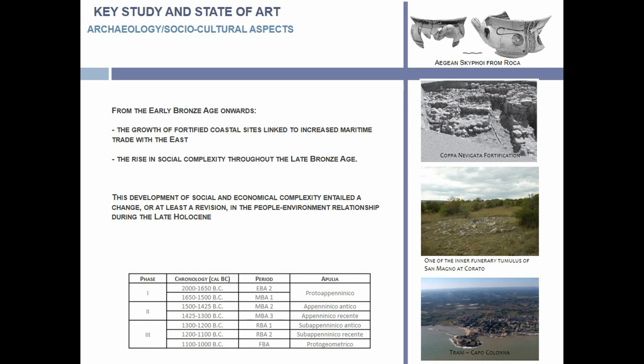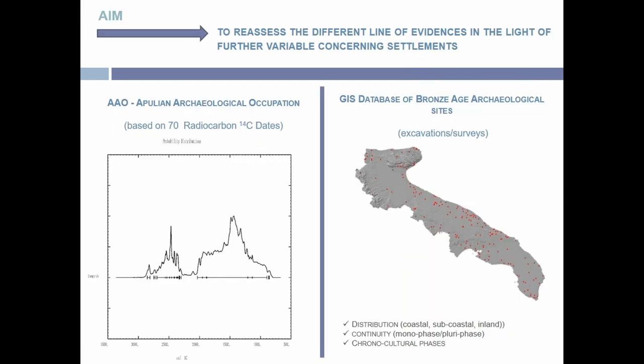These are the characteristics of the Bronze Age along the Apulian region. We speak about a region with a long coastal distribution, so our changes are connected to the relationship between the sea, coastal area, inland, and other areas of the region. This is the chronocultural division of the Bronze Age in the Apulian region, and this is our database and analysis.